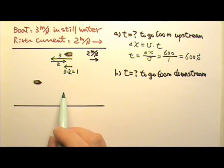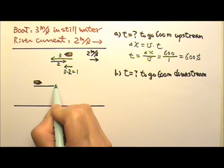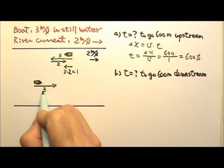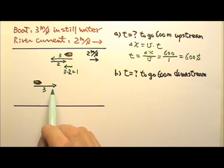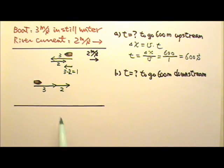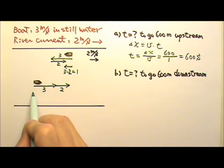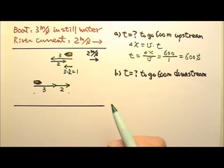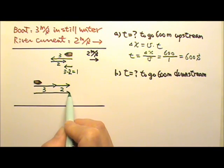When the boat aims downstream, it gives itself a velocity that's downstream at 3 m per second, while the river current also carries the boat downstream at 2 m per second. Adding those two velocity vectors tail to tip — starting here, ending there — the total velocity of the boat is 5 m per second.